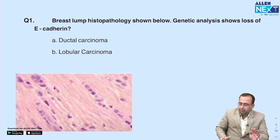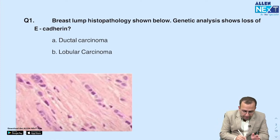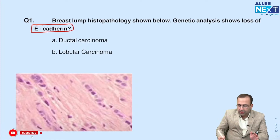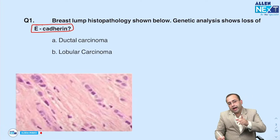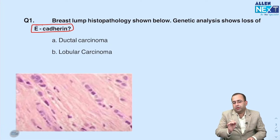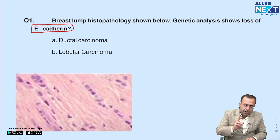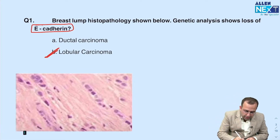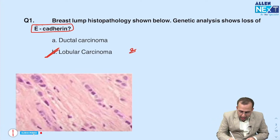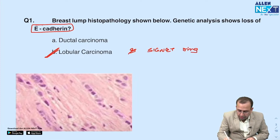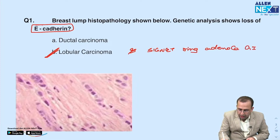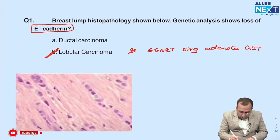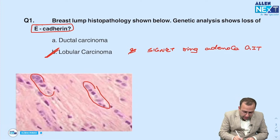A breast lump question was given with microscopy. It was associated with loss of E-cadherin. E-cadherin gene mutation is seen in two cancers: first is lobular carcinoma of the breast, and it is also seen in signet ring cell adenocarcinoma of the GIT.